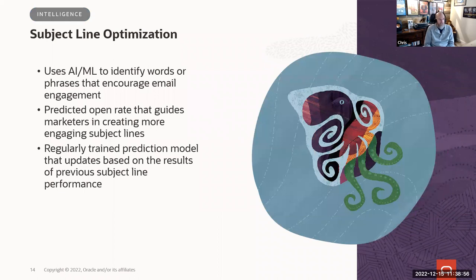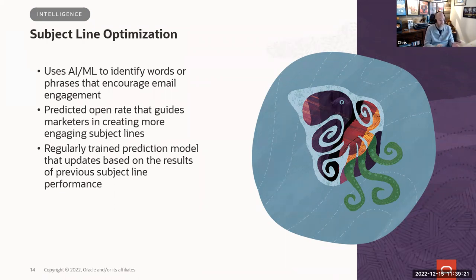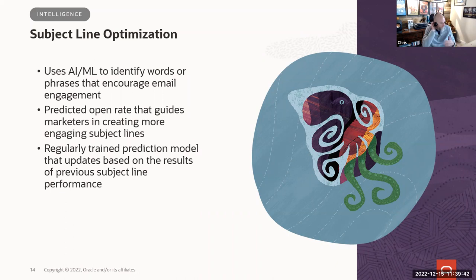Subject Line Optimization is being updated for customers with the AI add-ons. The underlying model is being refreshed with better data sets to improve predictions. Longer term, this opens the door to providing subject line recommendations rather than only ratings. The plan is to reach out to customers who already have AI enabled and get them onto a controlled availability program, likely in the first half of next year.